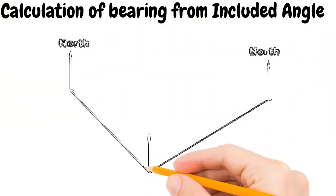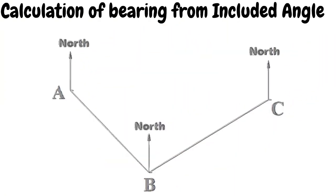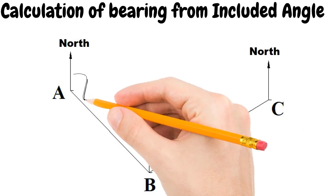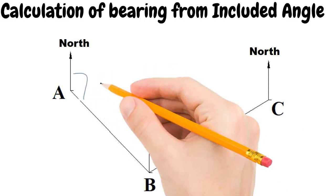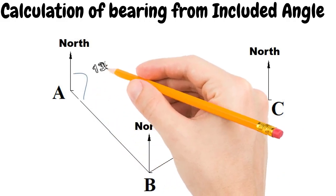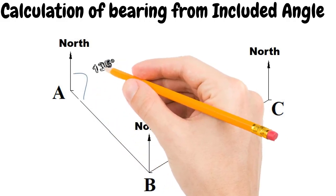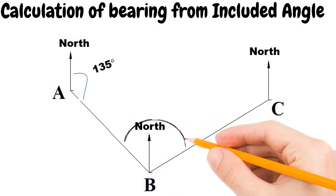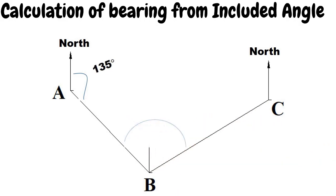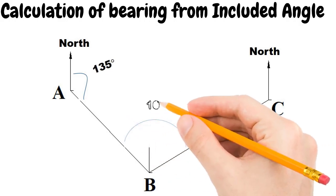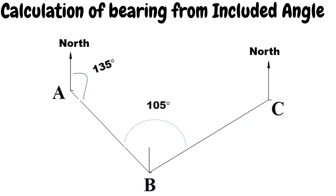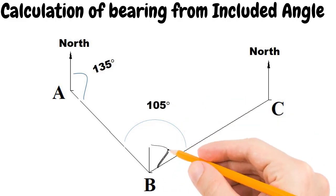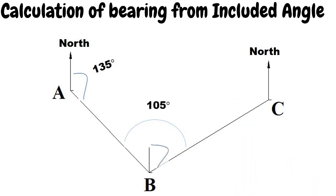Consider lines AB and BC. The forebearing of line AB is given as 135 degrees. The angle ABC is given as 105 degrees. We need to find out the forebearing of line BC.